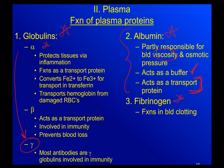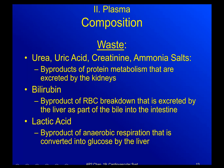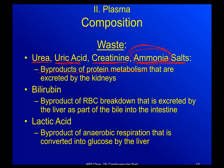Now let's talk about waste products. Urea, uric acid, creatinine, and ammonia salts are all byproducts of protein metabolism — meaning when we break down proteins from food like steak or chicken, or break down our own proteins that no longer function correctly, these waste products are created. They're normally excreted in the urine: the blood goes to the kidneys, and the kidneys filter these waste products out. That's why urine eventually smells like ammonia, and why cat urine smells so strongly of it.